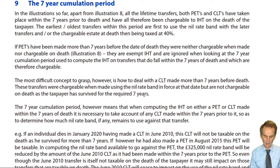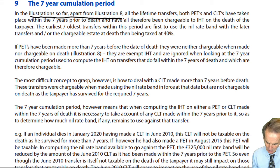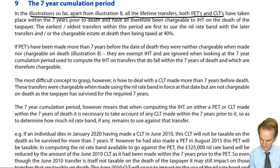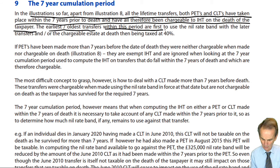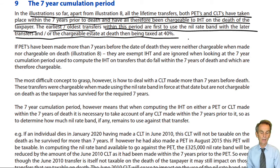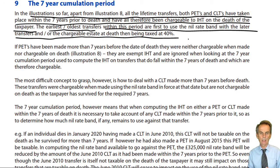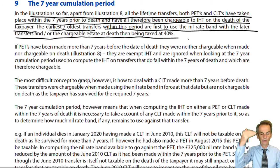It's entitled, simply enough, the seven-year accumulation period. In illustrations so far, apart from illustration eight, all the lifetime transfers — either PETs or CLTs — have all taken place within the seven years prior to death and have therefore been chargeable to IHT on the death of the taxpayer. We know that the earliest transfer within that seven-year period is the first to use the nil rate band, with the later transfers and the chargeable estate at death taxed at 40% above that.